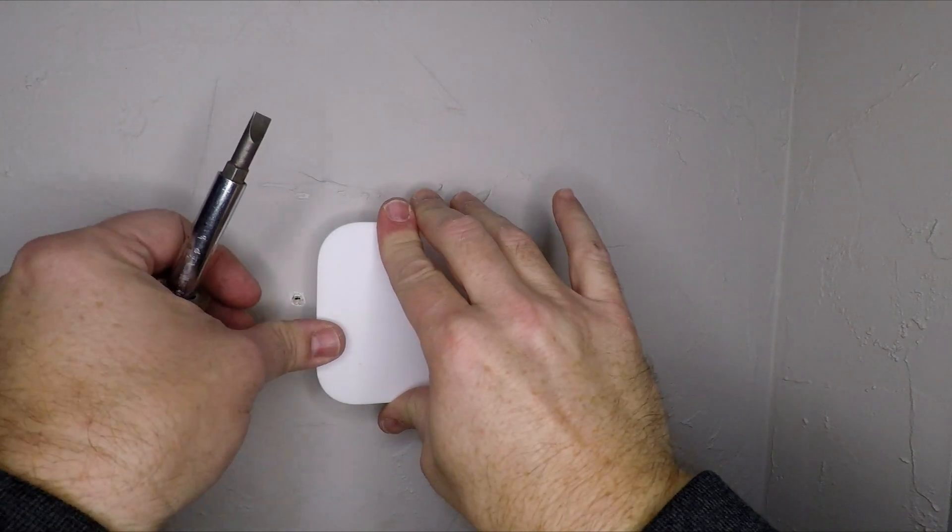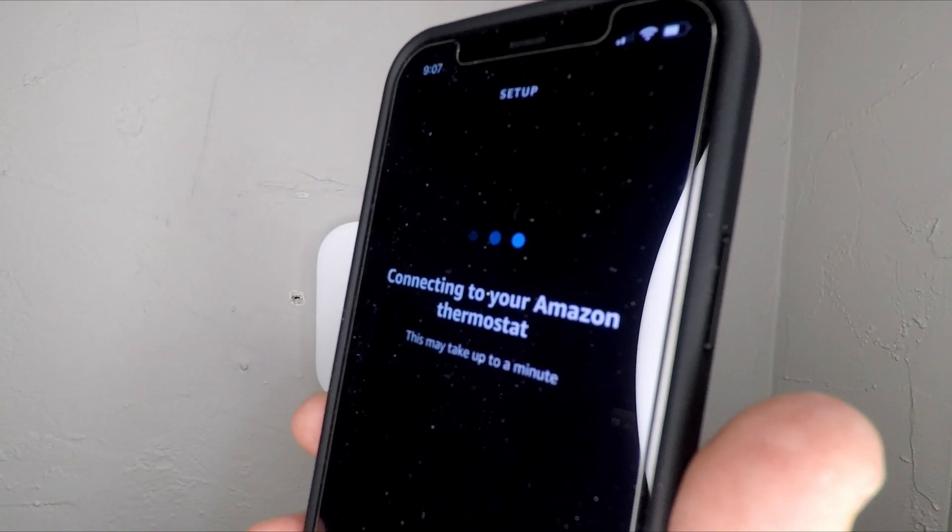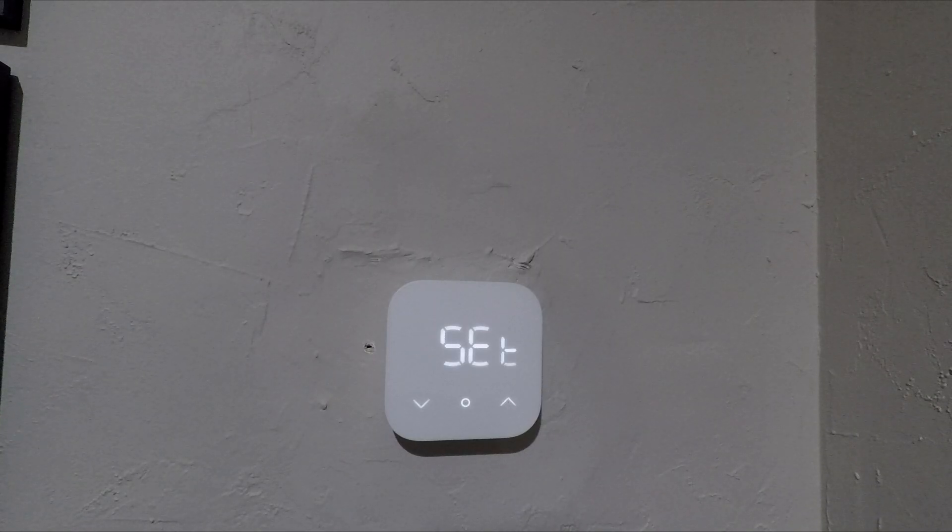And then you can make your adjustments using the app. Connected very easily and in no time at all I was able to use the app to get everything started, get my AC working, my heat set. I love that you can actually set the thermostat to hold your temperature within a range so the AC will cut on if it gets too hot and the heat will cut on if it gets too cold.